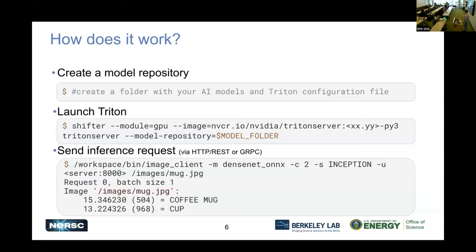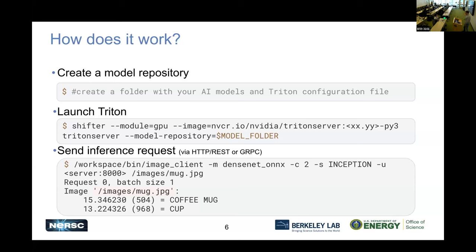You can send requests locally — from a login node or compute node within the NERSC network — or if you're using Spin, you can send requests from outside NERSC, like from your laptop at home, sending an image, array, or JSON data. Here's a demo using a DenseNet model. You pass it an image of a mug, and it uses DenseNet to classify it — it says it thinks it's a coffee mug or a cup. It's confident, just a simple thing.